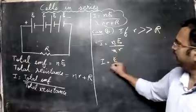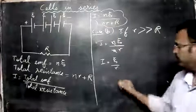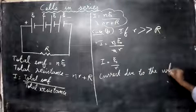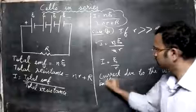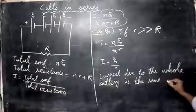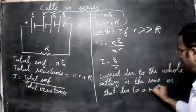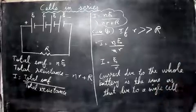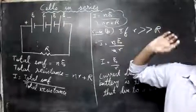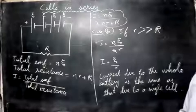So I equals ε/r, which means the current is the same as that of a single cell. The current due to the whole battery is the same as due to a single cell. So if internal resistance is very large, there is no benefit in connecting cells in series — the current does not increase.